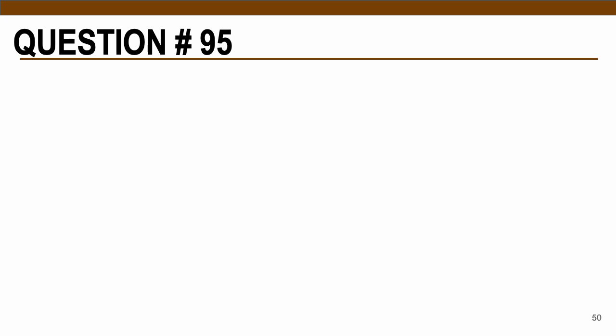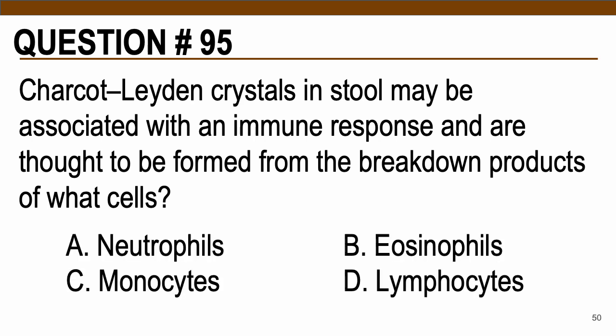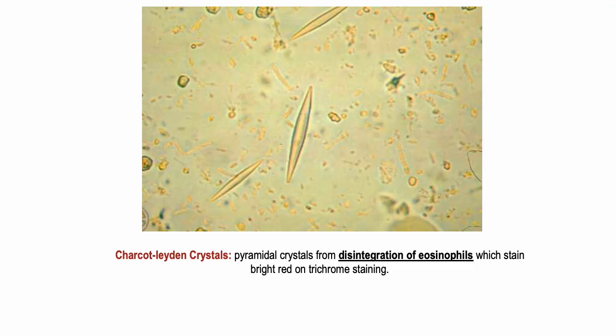Question number 95: Charcot-Leyden crystals in stool may be associated with an immune response and are thought to be formed from the breakdown products of what cells? For parasitic infection, the predominant cell is usually letter B — eosinophils. Charcot-Leyden crystals are pyramidal crystals from the disintegration of eosinophils, which stain bright red on trichrome staining.